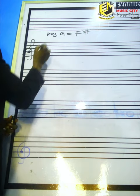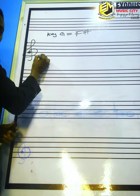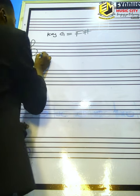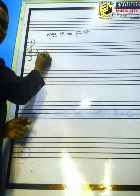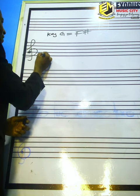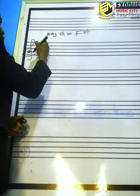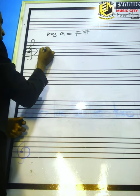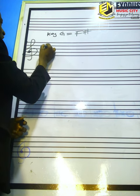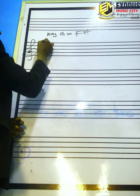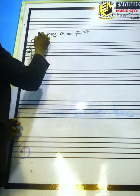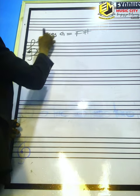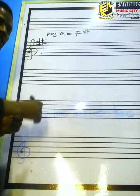Remember, on the staff this is E, then F. There is another F at the top — F, G, A, B, C, D, E, F. So that top line is F. You put your key signature there.